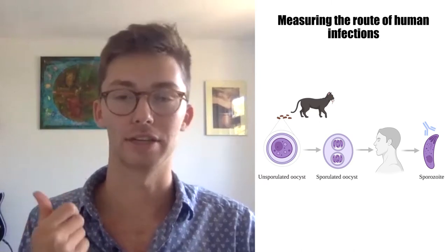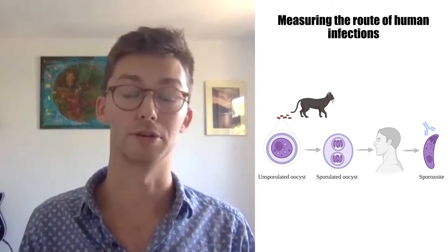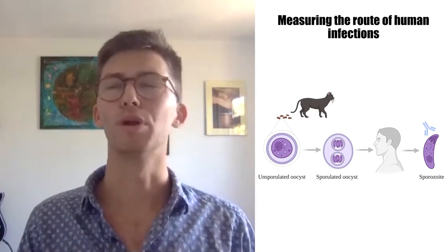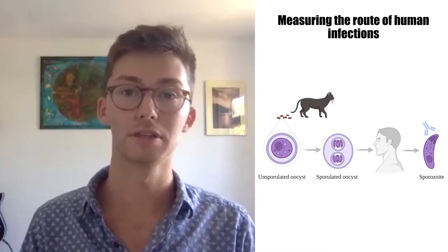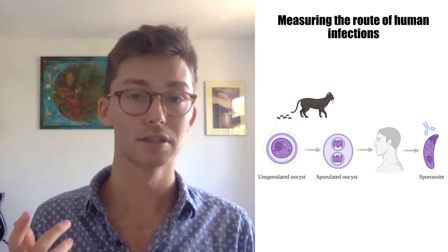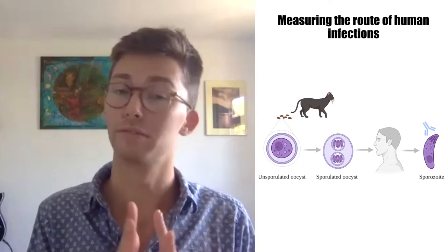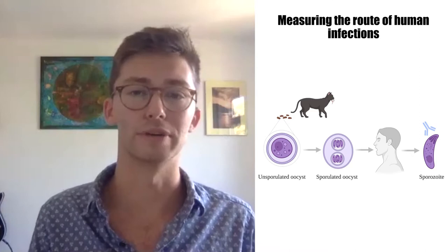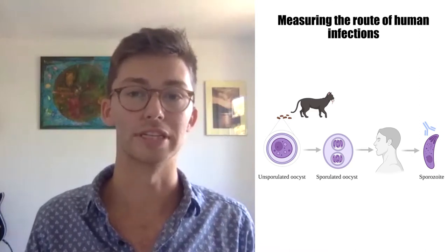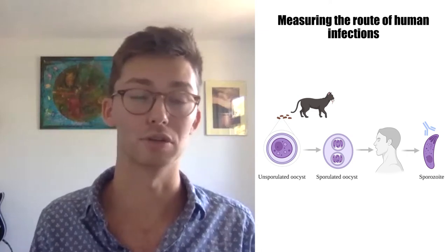The human body mounts an immune response against the sporozoite, and this is useful for scientists because it gives us a marker of infection — it tells us that this person has had an oocyst infection. So we can detect whether someone has had an oocyst infection by detecting these sporozoite-specific antibodies. But one of the problems is that if we don't know how long the antibodies persist in human blood, we don't know how useful the test is. If the antibodies are very short-lived, we might test and find none, but not know whether that's because the person wasn't infected via oocysts or simply because the antibodies have waned.